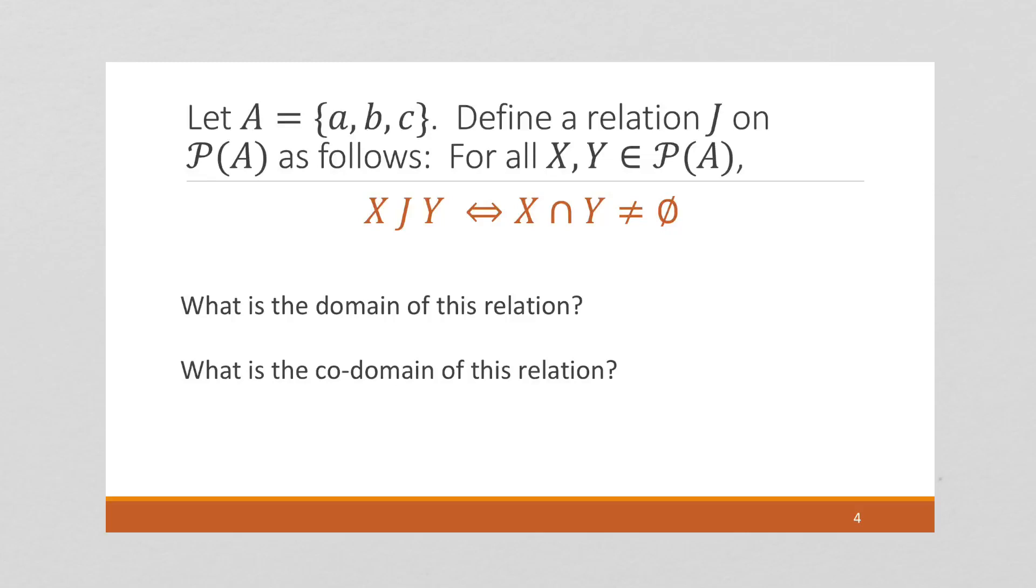Okay, so we kind of covered this in the previous slide, but the domain of the relation is the power set, and the codomain of the relation is the power set. And this part right here is an element of the domain, and Y is an element of the codomain, which in this example, they both happen to be the power set of A.